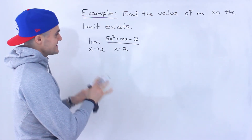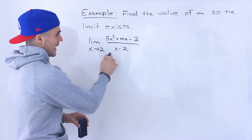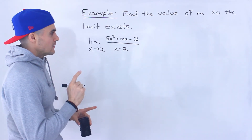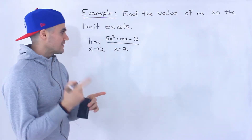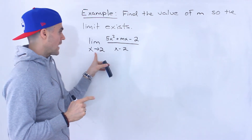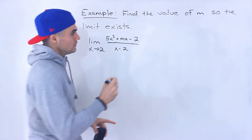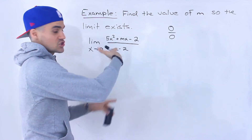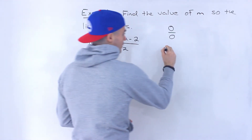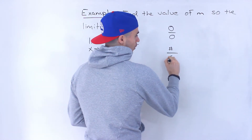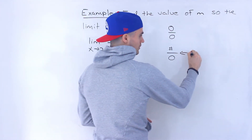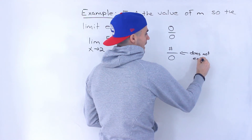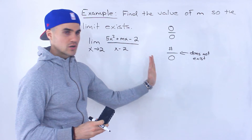If we do a direct substitution and plug in 2 for x, the denominator is going to be 0. The only way for a limit to exist when the denominator is 0 is if it's in the format 0 over 0 — then there's a chance for the limit to exist. If we end up having a number over 0, this limit will never exist, because that means there's a vertical asymptote at that x value.